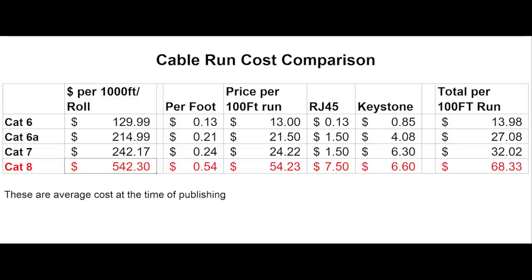For wall runs where you know you'll never need 10 gigabit and cost is a real constraint, at least do CAT 6 — you'll comfortably get 1 gig and 2.5 gig performance, and on short runs of 30 meters or less you can get 10 gig performance, though you are somewhat limiting yourself. I would still recommend CAT 6a for wall runs — if you're going through the trouble of running cables, put a little future-proofing in it, just not as much as CAT 8. I hope that helped. If you enjoyed this video, please give it a like, subscribe, and click the notifications icon.